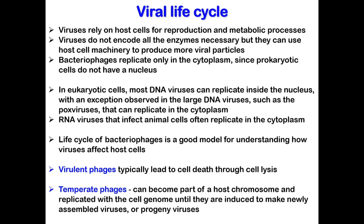The life cycle of bacteriophages is a good model for understanding how viruses affect host cells. Virulent phages lead to cell death through cell lysis, while temperate phages become part of the host chromosome and replicate with the cell genome until they are induced to make newly assembled progeny viruses.